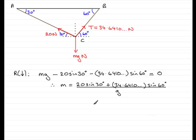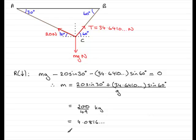Taking G to be 9.8 and using a calculator, you'd find that you get an exact value of 200 over 49 kilograms. Or if you want it as a decimal, you're going to get 4.0816 and so on, which you'll have to round. If we round it to three significant figures then that would be 4.08 kilograms — don't forget to write three significant figures, 3SF for short.